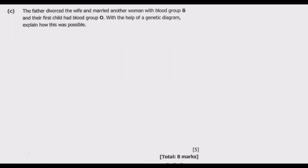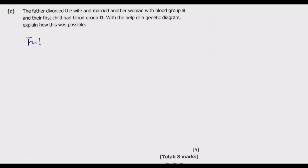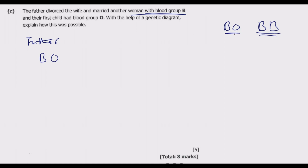Question C: the father divorced his wife and married another woman with blood group B, and their first child had blood group O. With the help of a genetic diagram, explain how this is possible. We know the father has blood group BO. The new wife has blood group B, which can be either BO or BB. But because their first child has blood group O, the only possibility is that both parents can donate O.